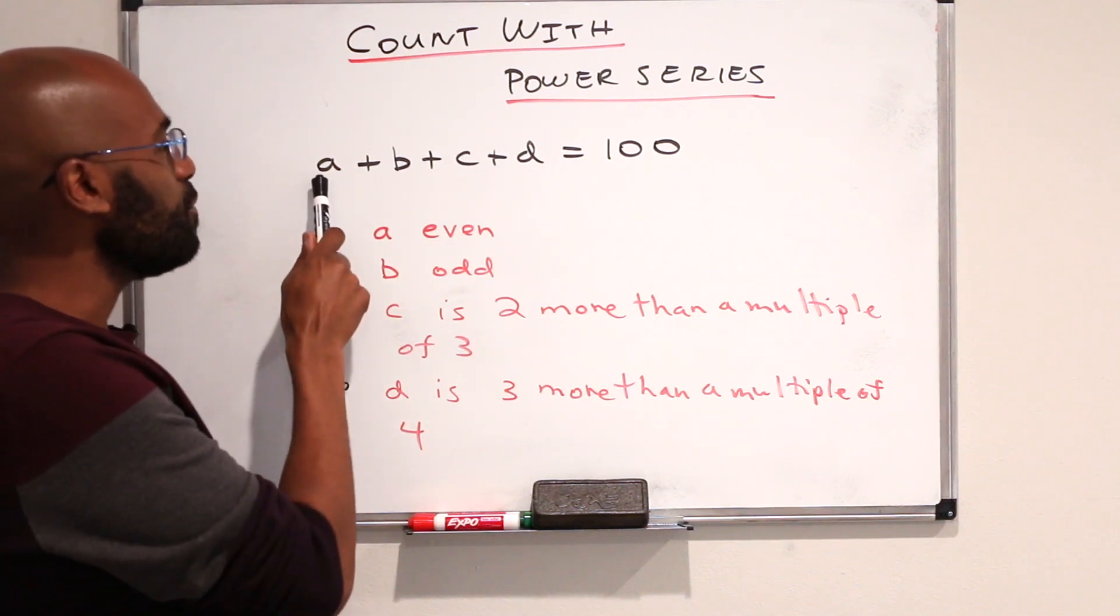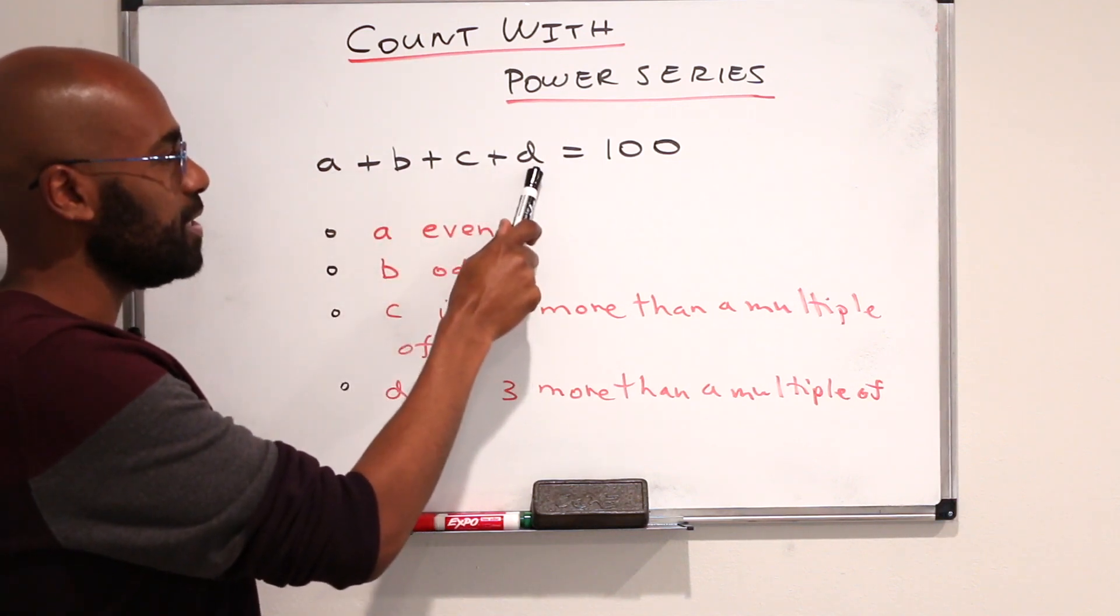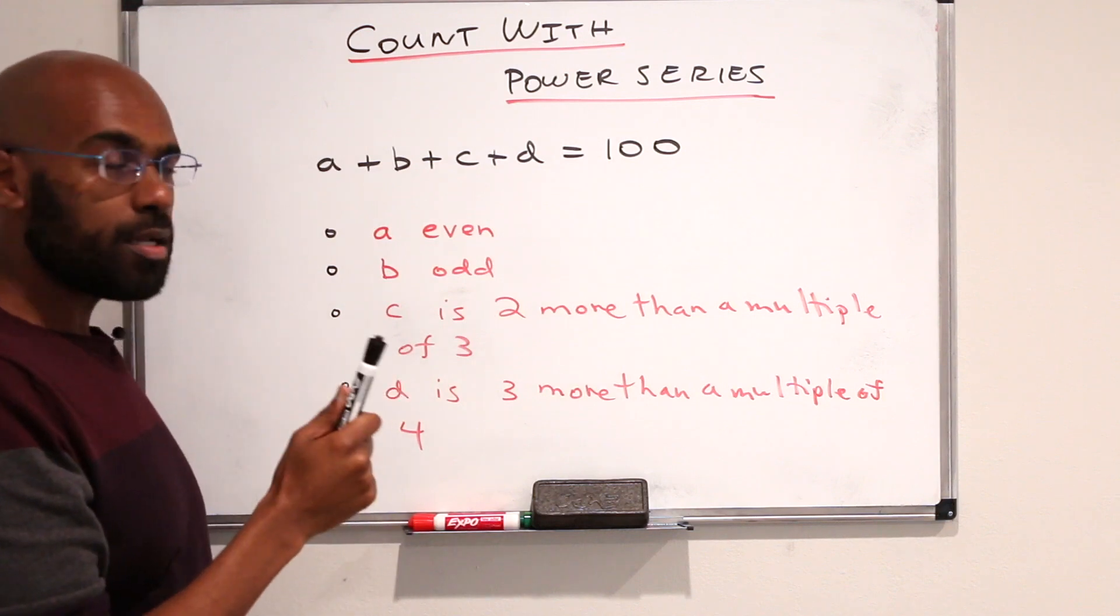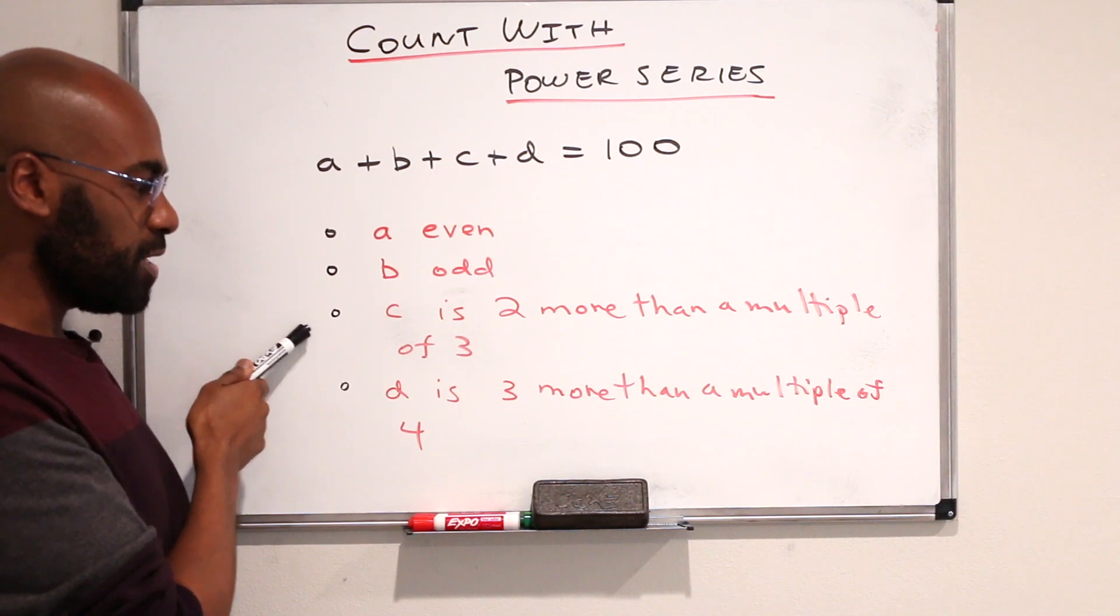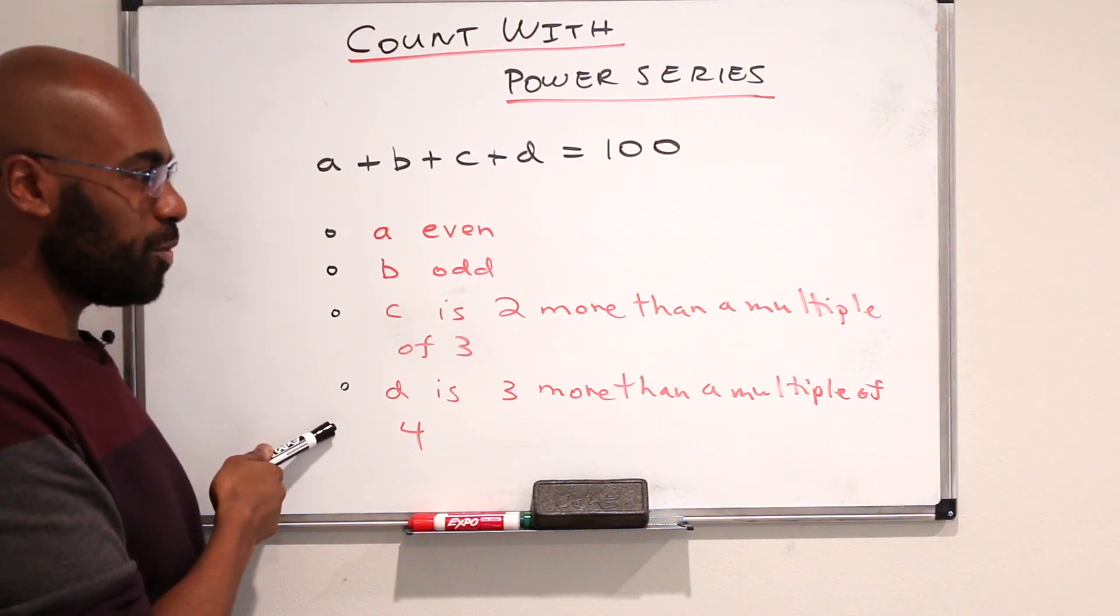Here's a counting question. How many ways are there to pick numbers A, B, C, D whose sum is 100, all non-negative, where A is even, B is odd, C is 2 more than a multiple of 3, and D is 3 more than a multiple of 4?